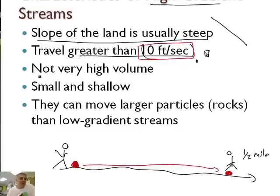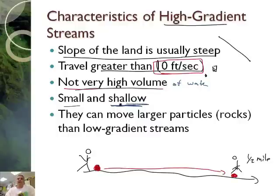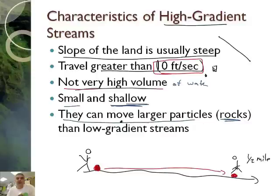In high gradient streams, they tend not to have a high volume of water. They tend to be small and shallow. As you saw in the video clips, the streams were not very deep. In Colorado, there aren't too many very deep rivers because we are pretty much the headwaters of most river systems due to our high elevation. If we moved to the Mississippi, of course it gets very deep and wide because that is where all the water is headed. High gradient streams can also move very large particles — rocks — larger than low gradient streams, because there is more energy since they're moving faster.